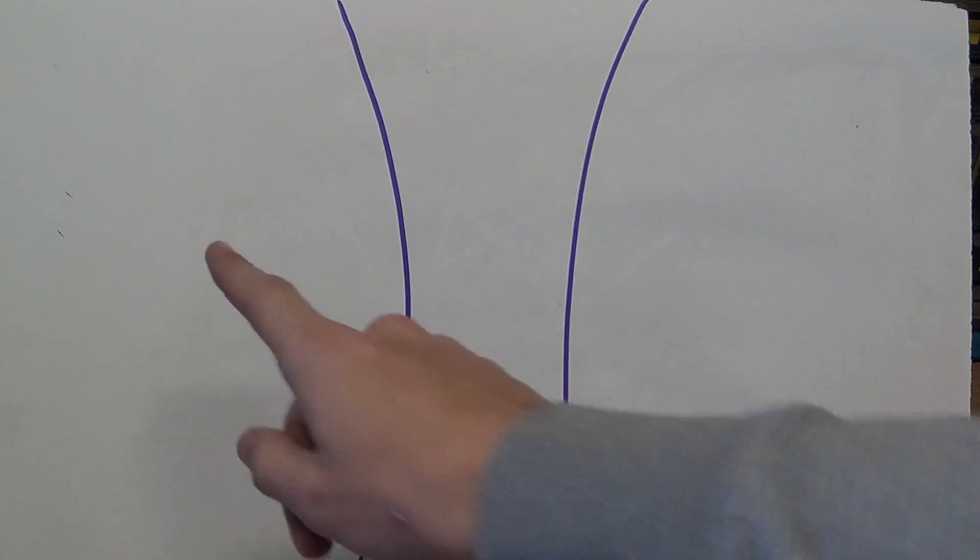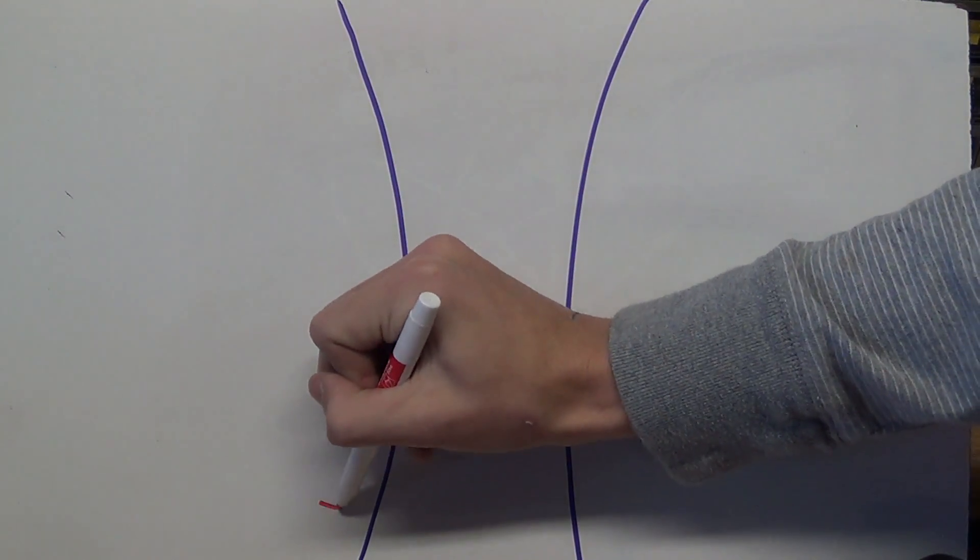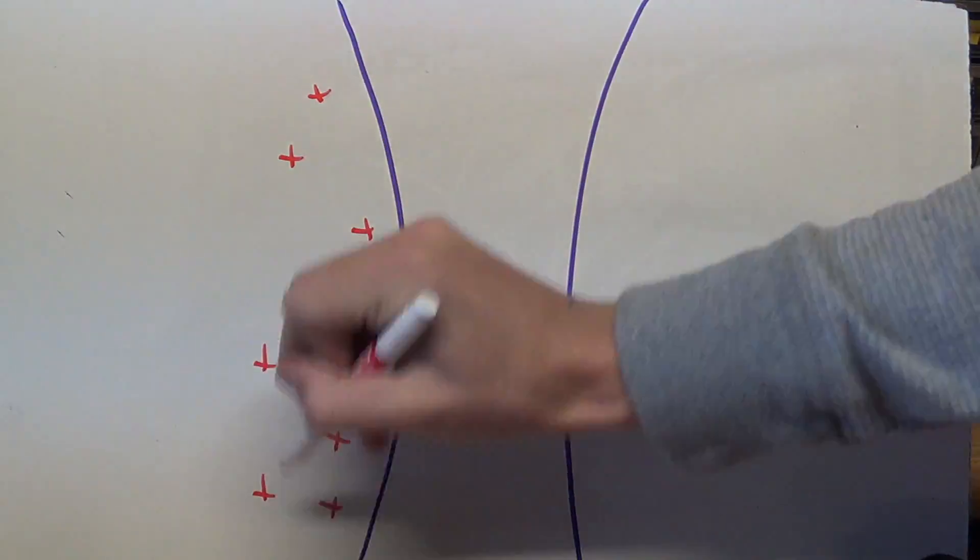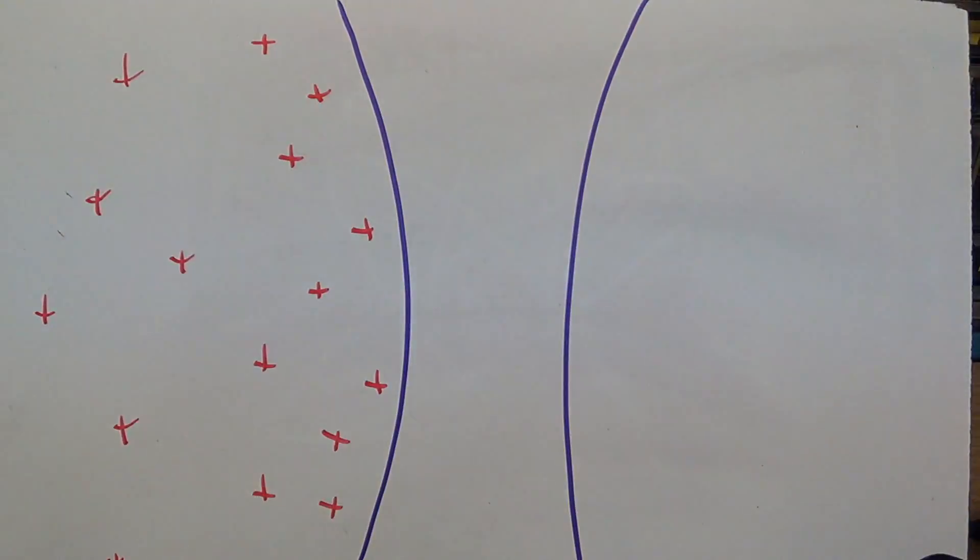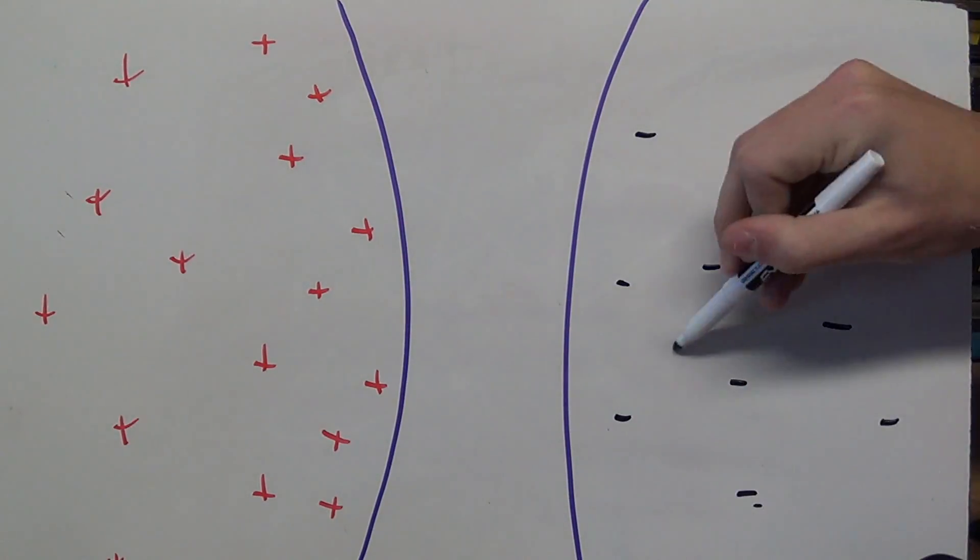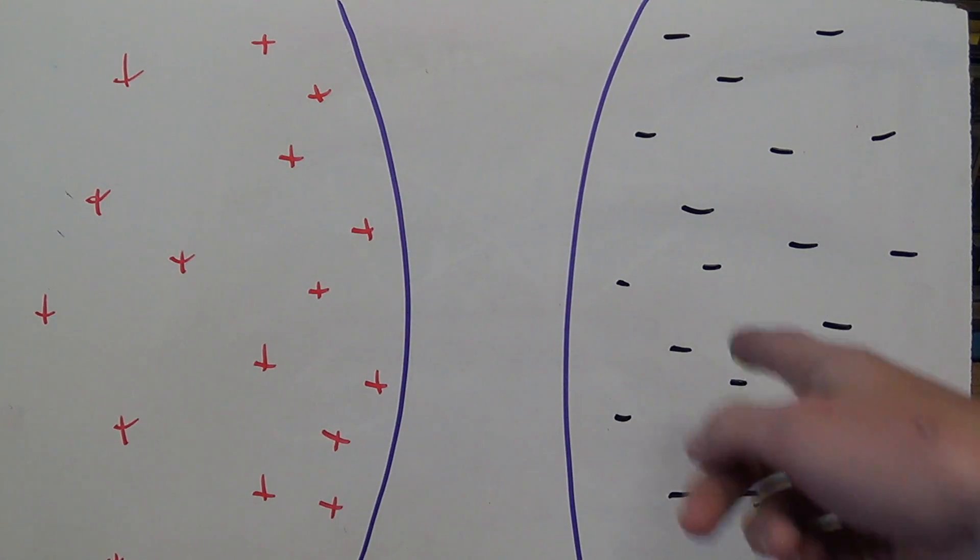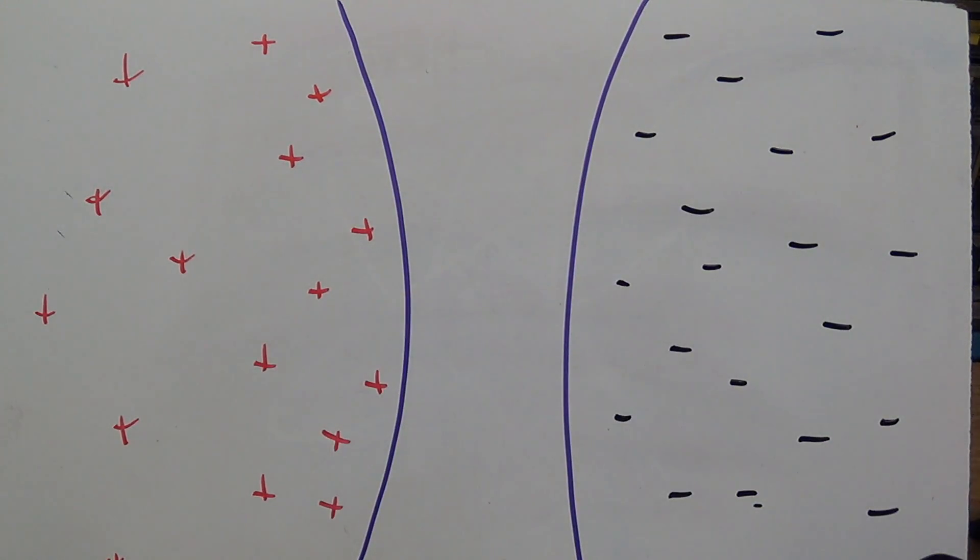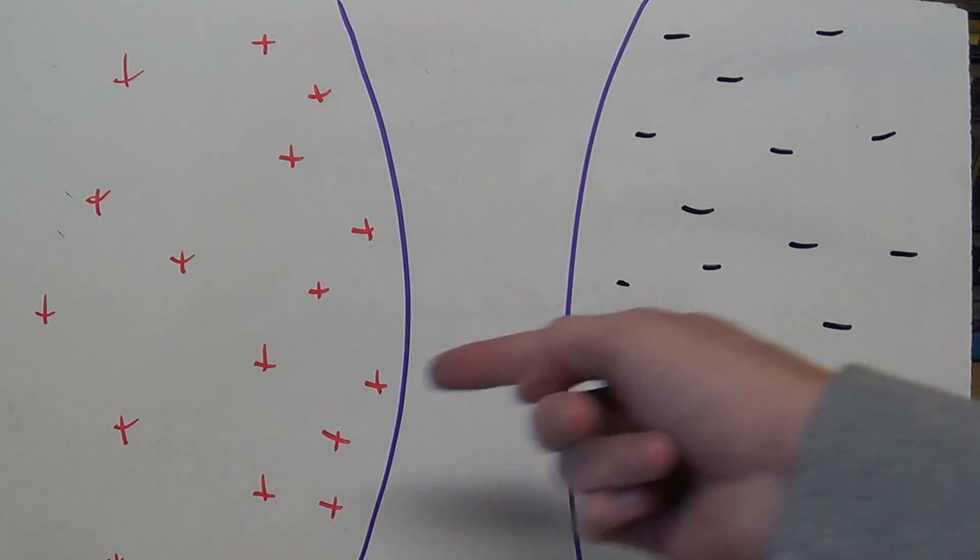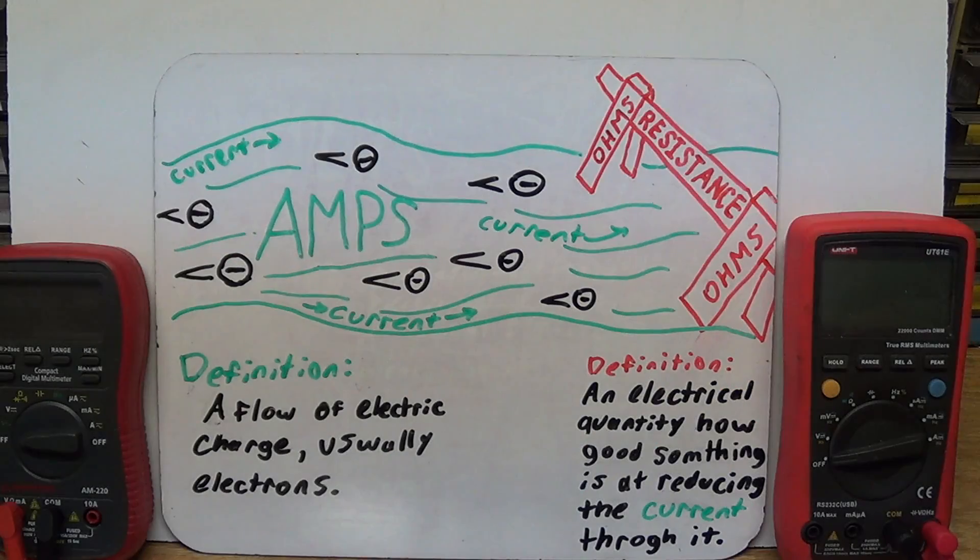Now imagine we have two surfaces, here and here. Right now, neither surface has a net charge to it, so let's go ahead and give this surface a positive charge, and let's give this surface a negative charge. Now voltage is just a measure of how badly these electrons want to fill in the holes of those atoms over there. And the more badly these electrons want to get over there, the more stuff they will fight through to get over here. That's where resistance will come in later on.